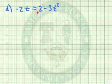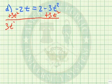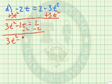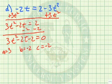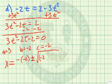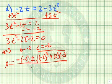Let's try one more: negative 2t equals 2 minus 3t squared. We want to get the t squared to the left, putting it first. So we have 3t squared minus 2t equals 2. These cancel, so let me subtract 2 from both sides, being careful to put things in the correct order. We get 3t squared minus 2t minus 2 equals 0. Now we can identify a is 3, b is negative 2, and c is negative 2 — make sure you remember the negative signs. So using the quadratic formula: negative b plus or minus the square root of b squared minus 4 times a times c, all divided by 2 times a.